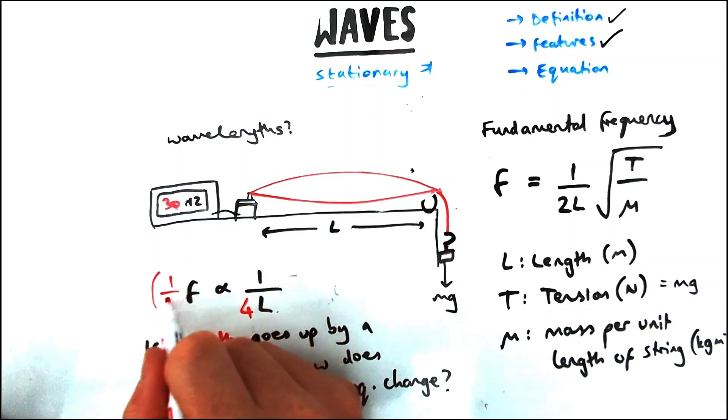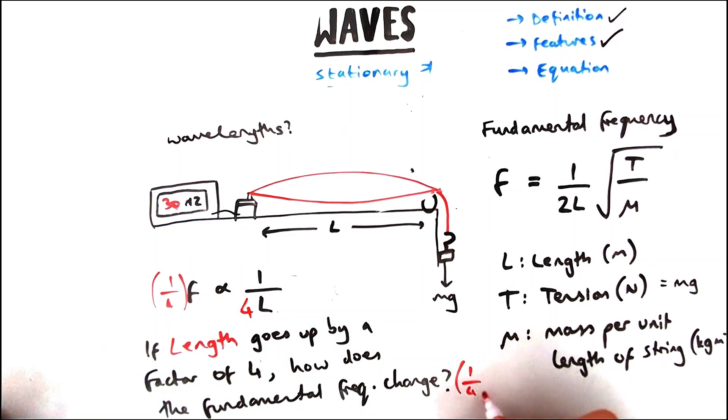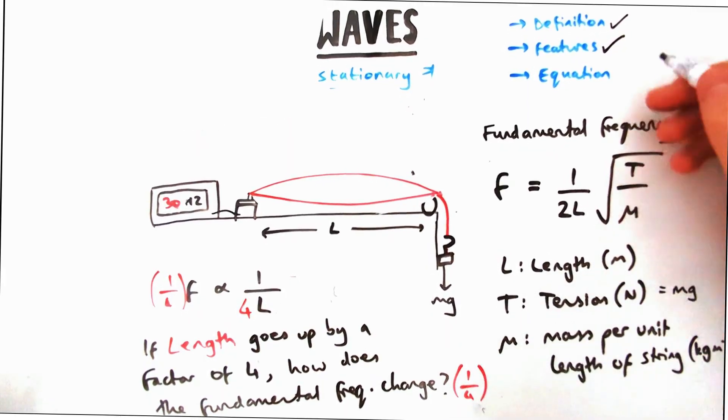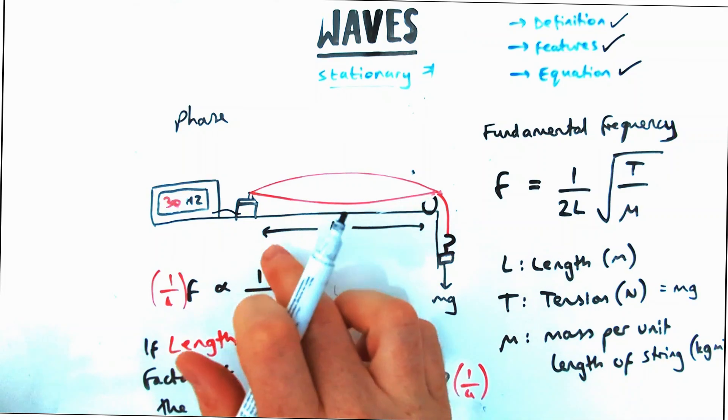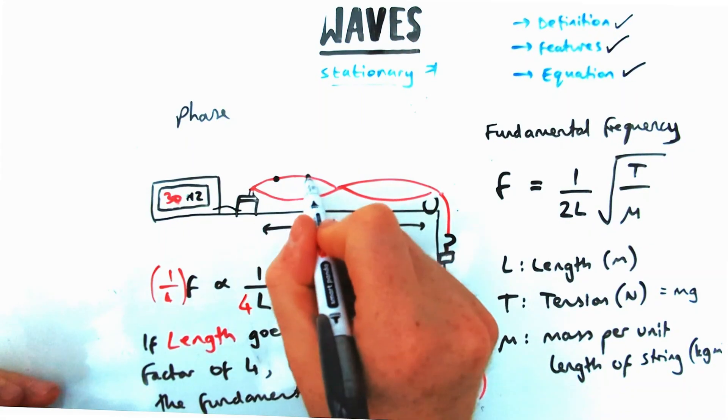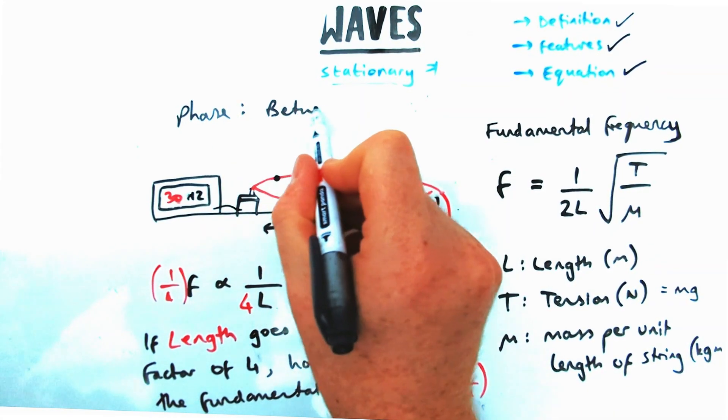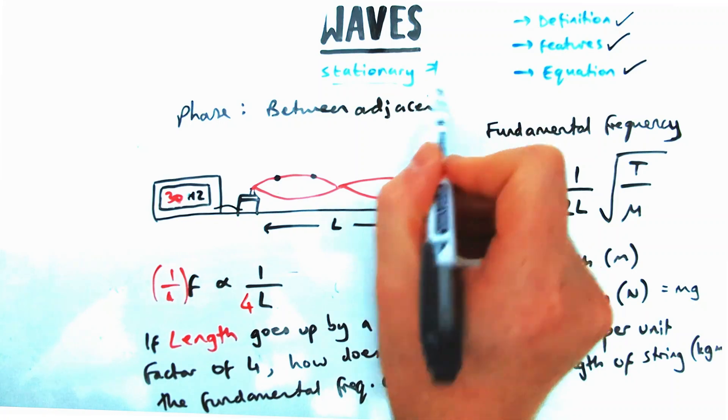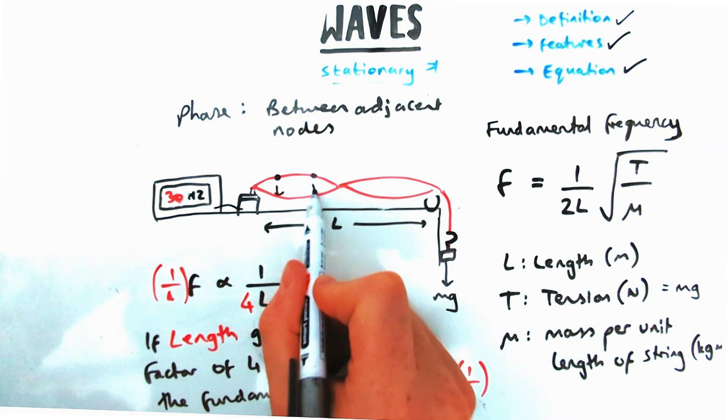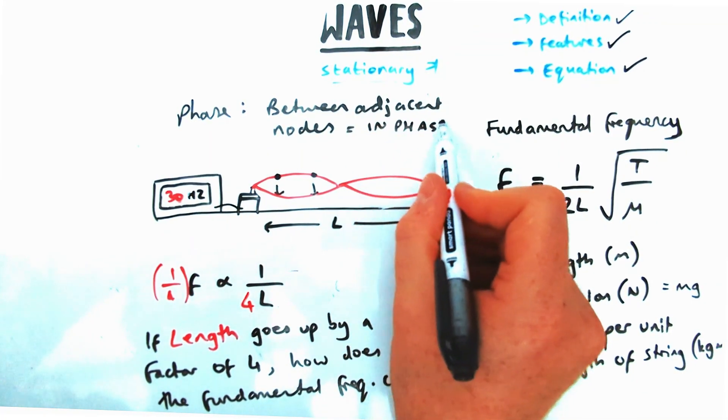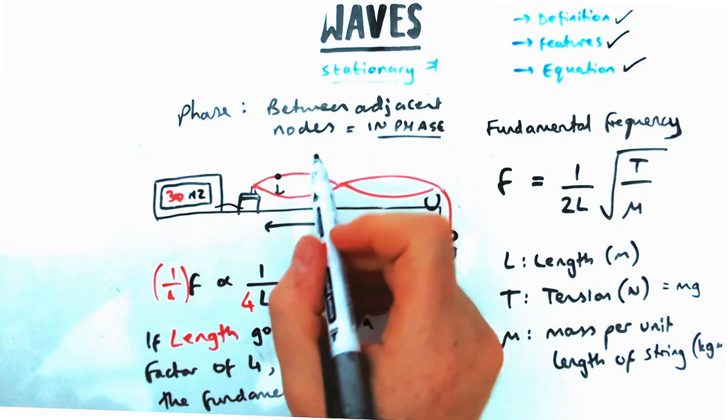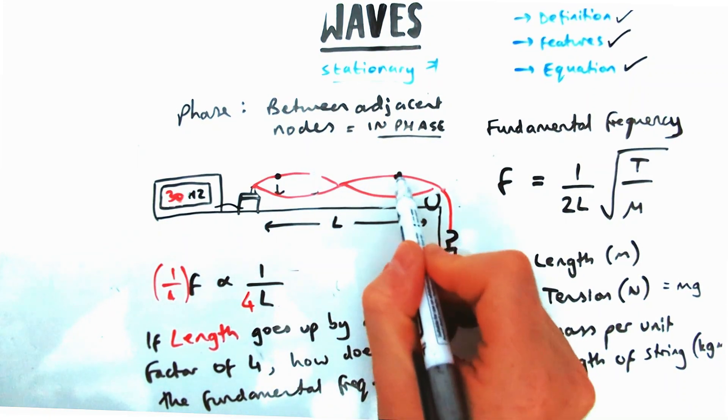Lastly, we're going to talk about phase. Phase on a stationary wave is easy once you get your head around it, but it's a bit different to progressive waves. Let's say I've got these two points here, so these two points are between adjacent nodes, i.e., they're between two nodes. What is the phase? Well, they're in phase. They're going to go up and down exactly the same time period, exactly the same velocity as each other, so they're in phase.